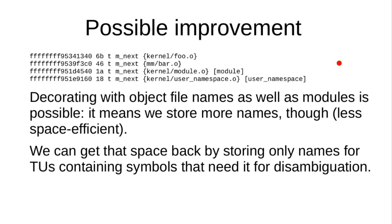In that situation, it's at least helpful for a user to know that the symbol is in a certain module — more helpful than knowing which object file in the kernel it came from. So I think having both is actually valuable. This may be partly because DTrace already has notation for the module stuff and people are used to it.